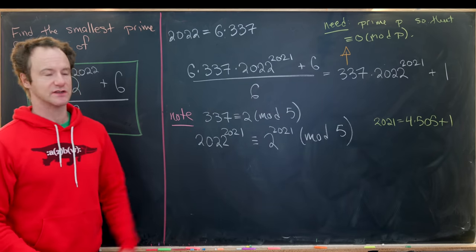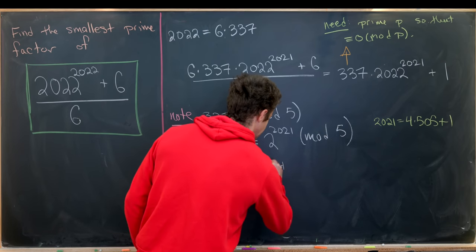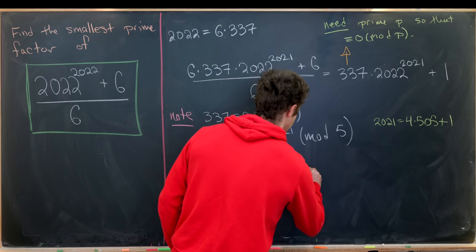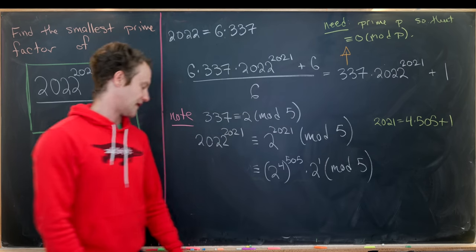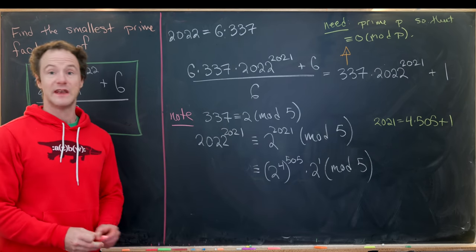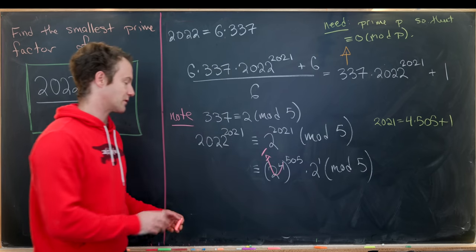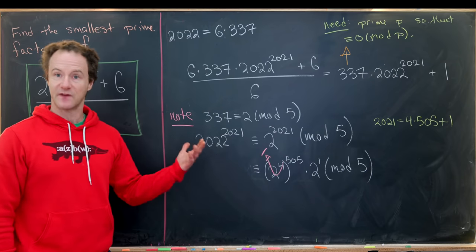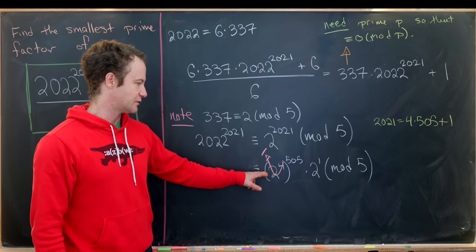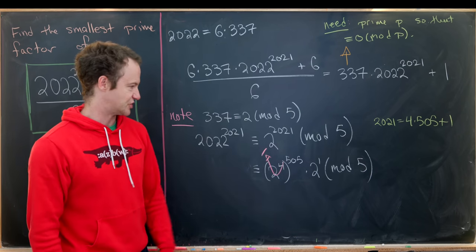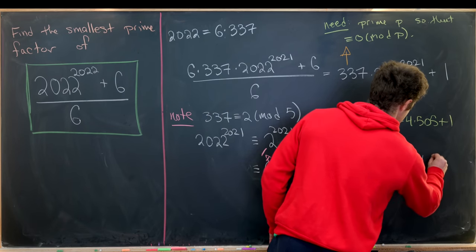Let's write 2021 as 4 times 505 plus 1. That's just 2020 plus 1. And then we can rewrite this as 2 to the 4, all to the 505 times 2 to the 1, and this is all occurring mod 5. But now by Fermat's little theorem, this 2 to the 4 is just equal to the number 1, because 4 is 5 minus 1. So this is equal to 1 to the 505, which is just 1 times 2 to the 1. So this is congruent to 2 mod 5.